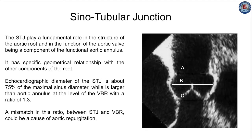The sinotubular junction is not perfectly circular and shows a mildly trifold or scalloped outline. The sinotubular junction plays a fundamental role in the structure of the aortic root and in the function of the aortic valve, being a component of the functional aortic annulus. It has specific geometrical relationships with the other components of the root. Despite the area of the sinotubular junction increasing with age and hypertensive cardiomyopathy...